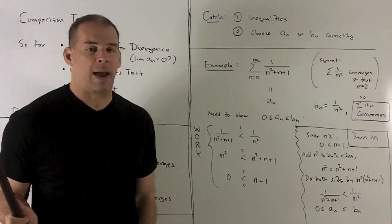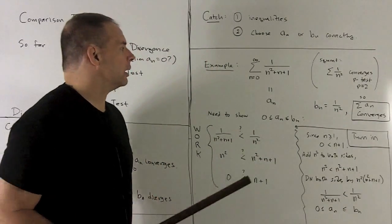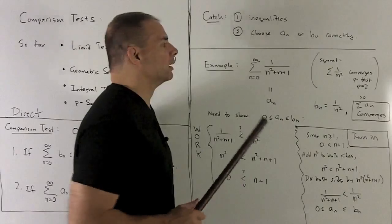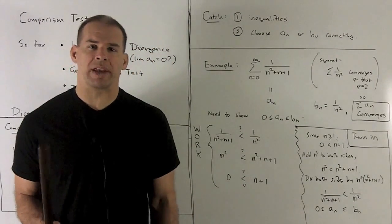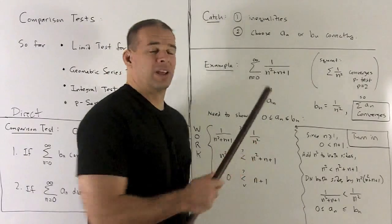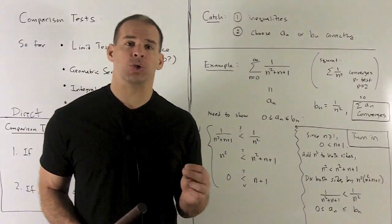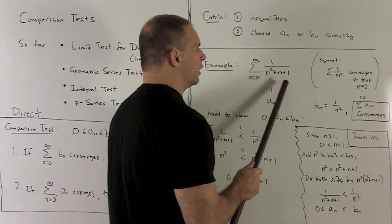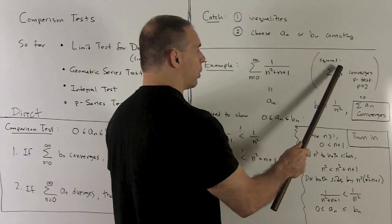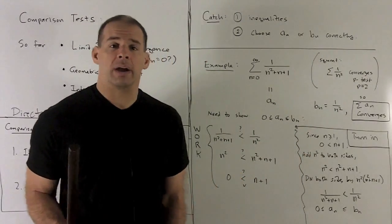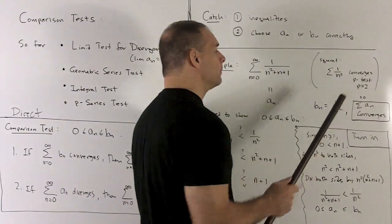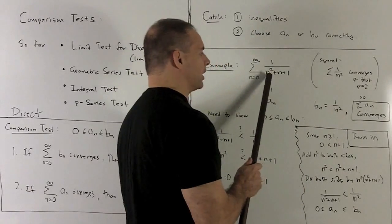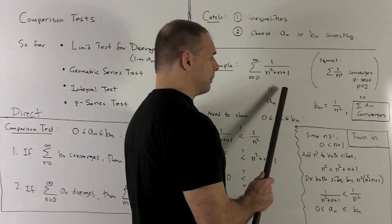Let's take a look at an example, and then we'll look at why this is true. I'm going to try the sum from n=0 to infinity of 1/(n²+n+1). The trick is to squint and try to find the terms in your sequence that are going to grow the fastest — that usually gives away what you're going to compare to. If I squint at this long enough, this really looks a lot like the series for 1/n². And 1/n² is going to converge by the p-test with p=2. So if I set up my inequality correctly, I'll get that this series converges by the direct comparison test.